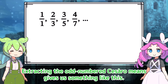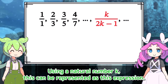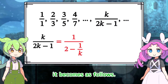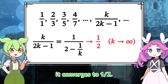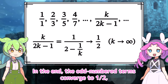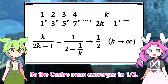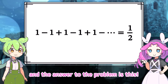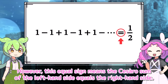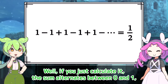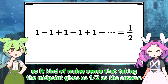Do these Cesaro means converge somewhere? What if we separate the even-numbered and odd-numbered terms? The even-numbered Cesaro means always equal 1/2. Extracting the odd-numbered Cesaro means, using a natural number k, this can be represented as an expression. By dividing the numerator and denominator by k, as k approaches infinity, it converges to 1/2. So the odd-numbered terms converge to 1/2 and the even-numbered terms are always 1/2. The Cesaro mean converges to 1/2, and the answer to the problem is 1/2. However, this equal sign means the Cesaro sum of the left-hand side equals the right-hand side.